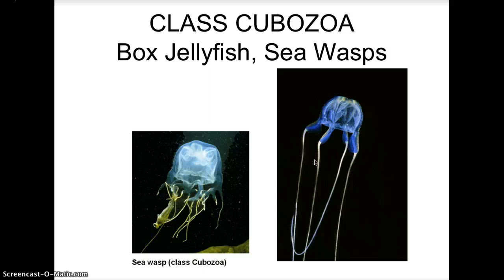Class Cubozoa includes the box jellies and sea wasps. While people often fear shark attacks, box jellies are among the most venomous creatures in the sea. They live in tropical waters, and in Australia and Hawaii you can have box jelly blooms — swarms triggered by water temperature, moonlight, and conditions. Beaches often put up netting because box jellies can be as small as your pinky nail. If stung by a box jelly, you could die within minutes. In the movie Seven Pounds with Will Smith, he kills himself by putting box jellies in the bathtub.